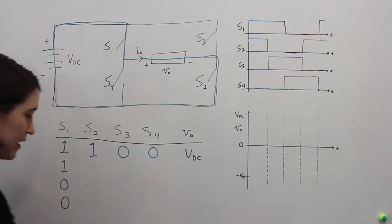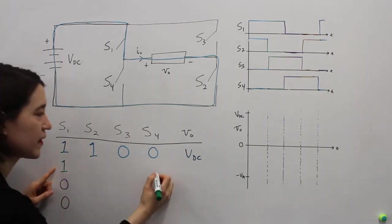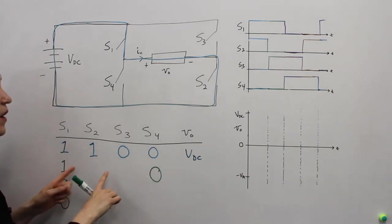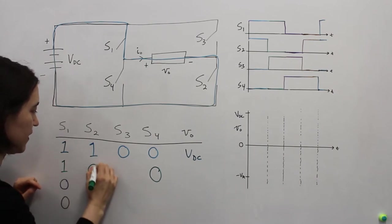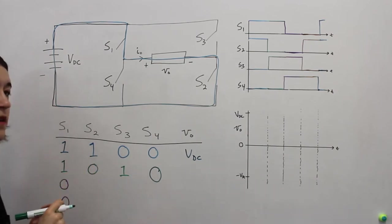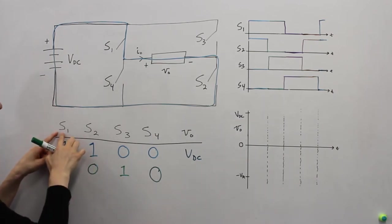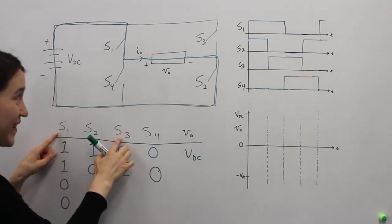Then let's look at the next one. We know these are complementary. This has to be 0. And now we're going to switch this. So this is going to be 0 and this is going to be 1. If we look at that, that means S1 is on and S3 is on.